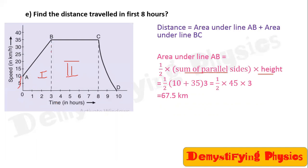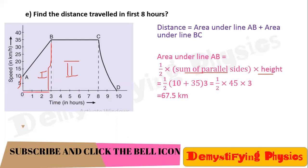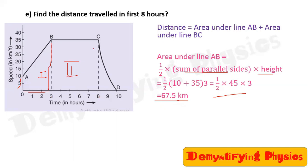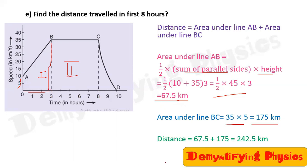The two parallel sides are 10 and 35, and the height is 3, giving 67.5 kilometers. The area of the rectangle: length is 35 and breadth is 8 minus 3, which is 5, so 35 into 5 equals 175 kilometers. The total area is 242.5 kilometers, so this is the distance traveled in the first eight seconds.